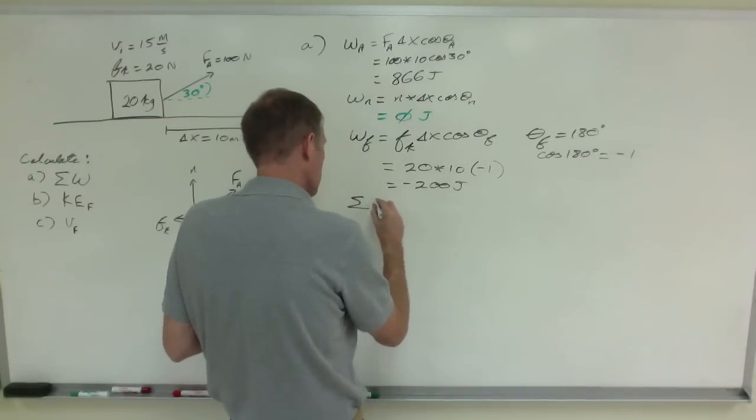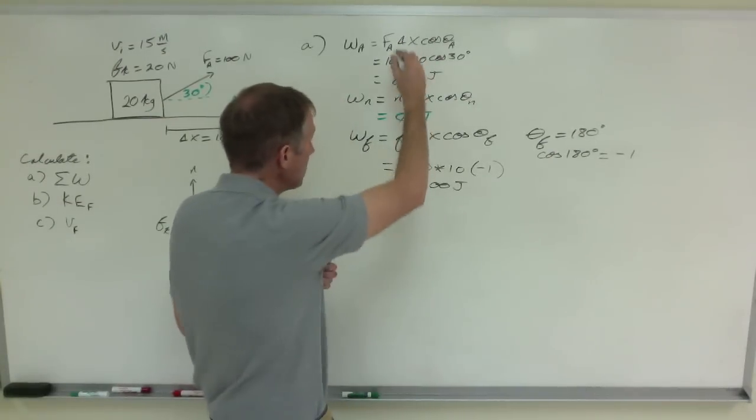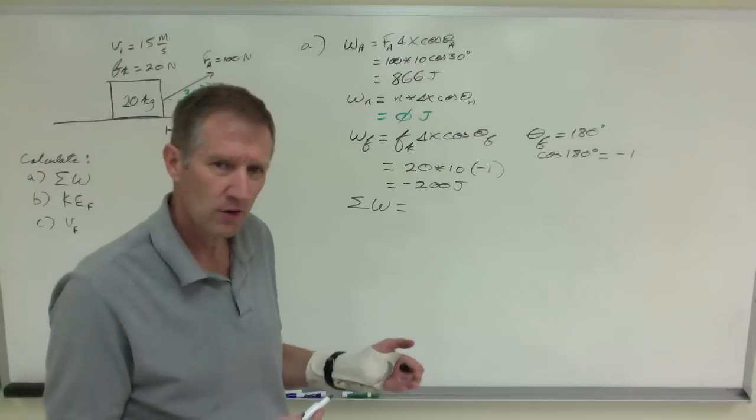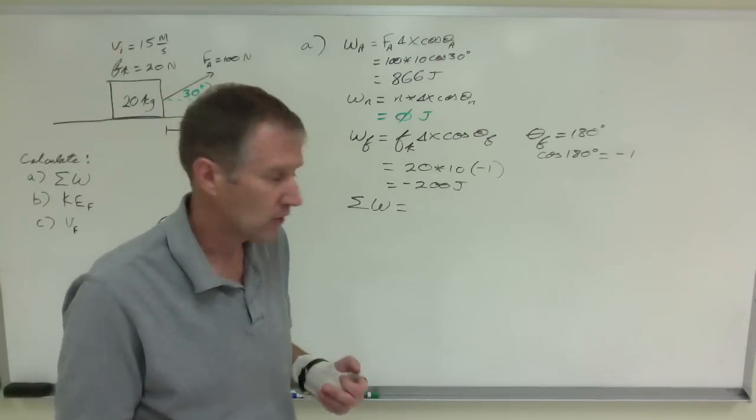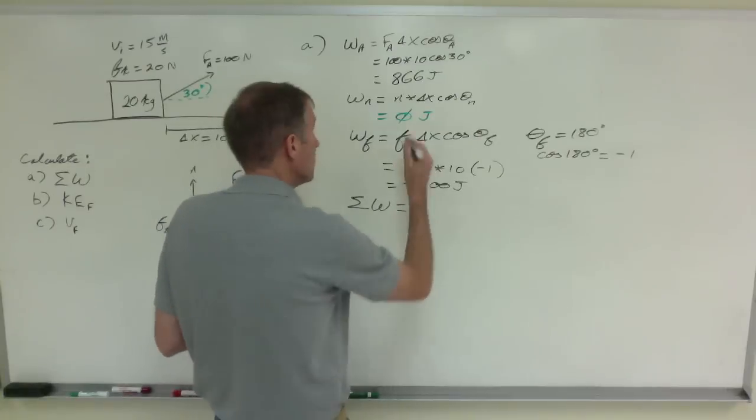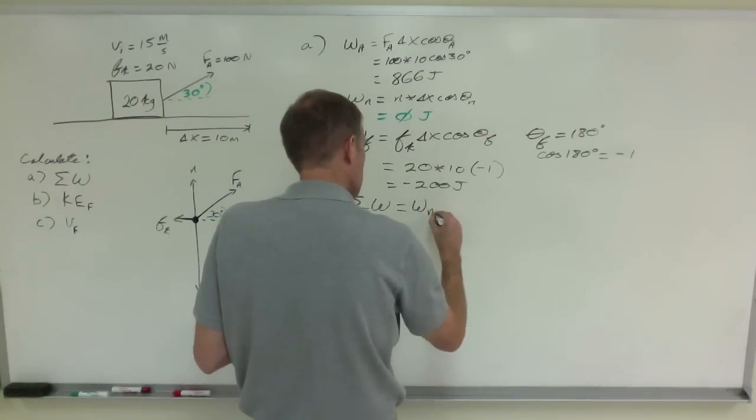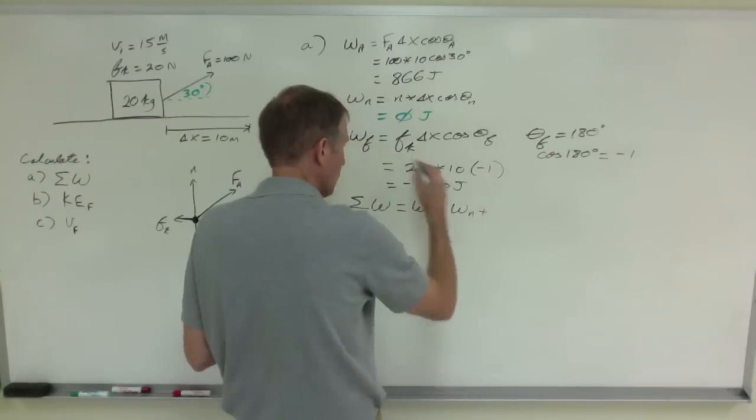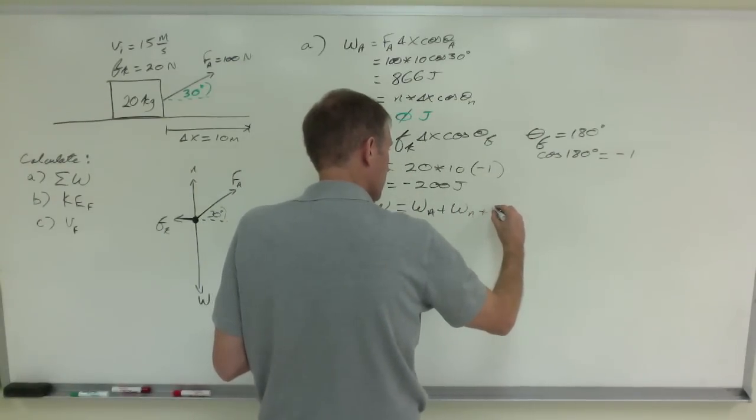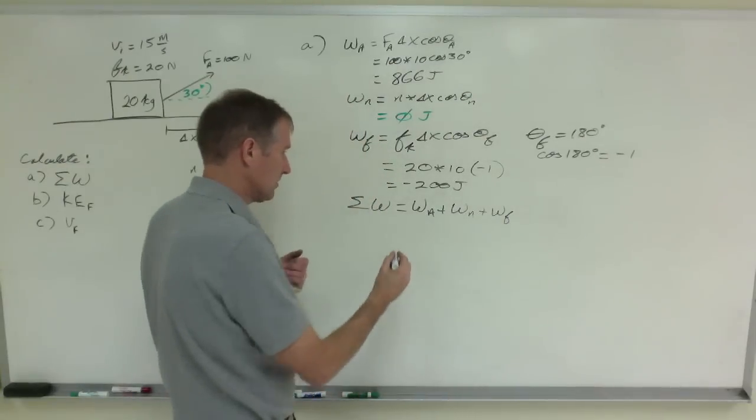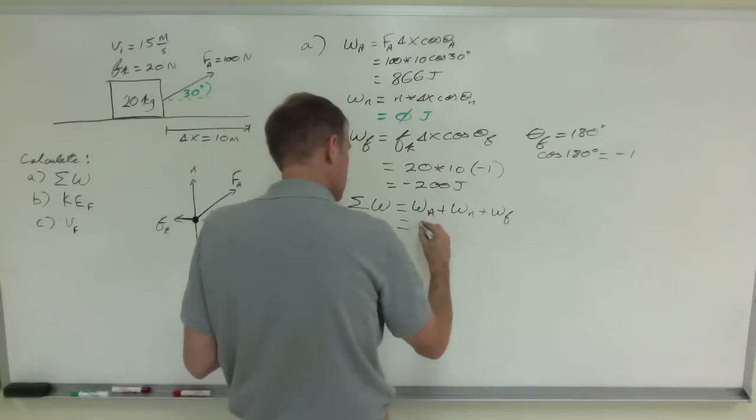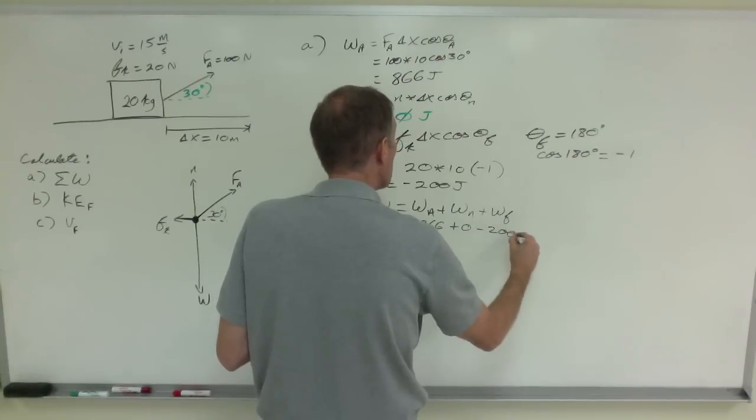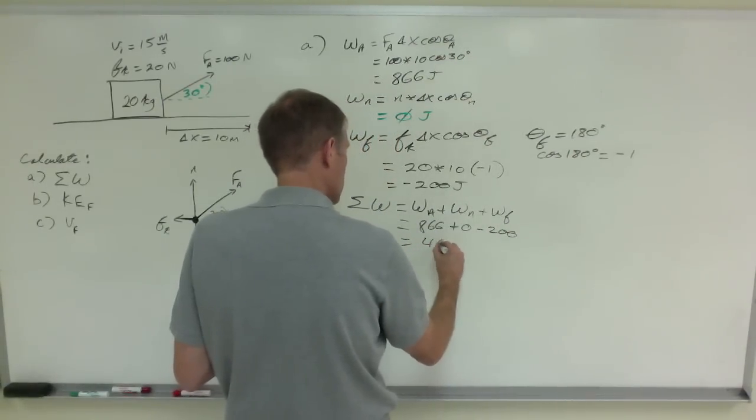So to calculate the net work, add them all up. Work is a scalar quantity, so there's no direction associated with it, no like left, right, north, south. But it can be positive or negative. So we're going to add the work done by the applied force plus the work done by the normal force plus the work done by friction which is against the system.